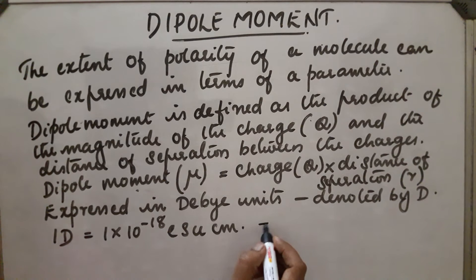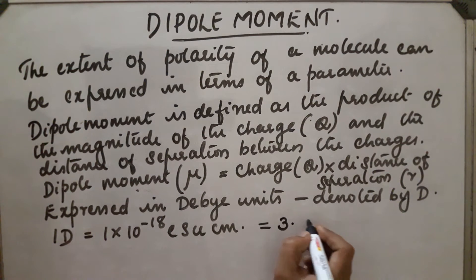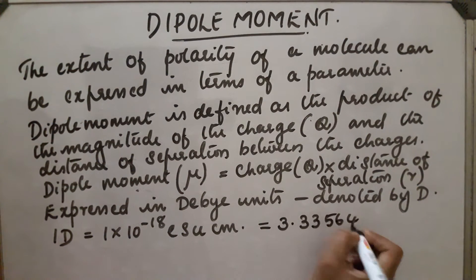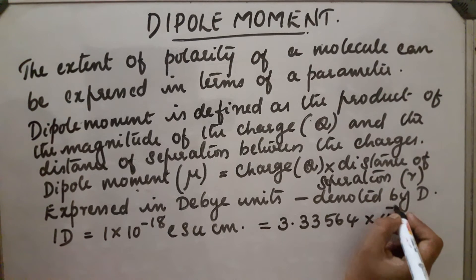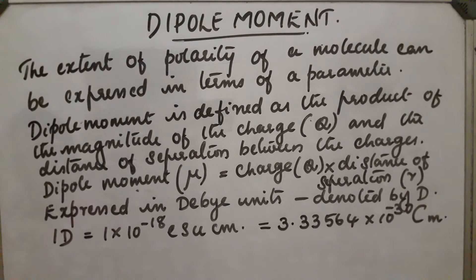1D can also be expressed in coulomb metre. So 1D is equal to 3.33564 into 10 raise to minus 30 coulomb metre.